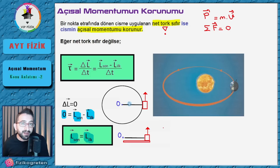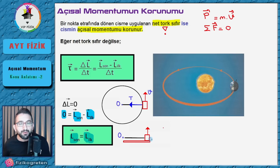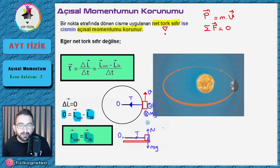Düzgün çembersel hareketten örnek vererek konuyu biraz daha iyi anlayalım. Yatay düzlemde düzgün çembersel hareket yapan bir cisme etki eden kuvvetleri gösterelim: cismin merkeze doğru ip tarafından çekildiğini biliyoruz, yani bir T gerilme kuvveti var. Bir de cismin zeminin içine doğru bir ağırlığı var. Masayı yan profilden de çizdim ki daha rahat anlayalım. Yan profilden baktığımızda T kuvveti içeri doğru, mg aşağı doğru (çarpı yönünde), masadan cisme doğru da normal kuvveti (nokta yönünde) etkiler. Hızı kuvvet olarak göremezsiniz.